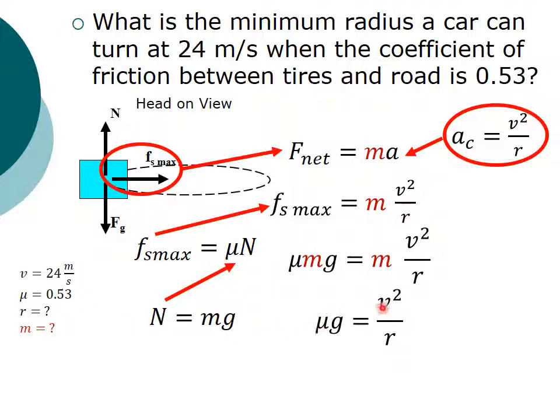Now all I have left is the only variables that I actually know. I know v, I know mu, and g is a constant that I already know, and now I can solve for r. I do a little bit of quick algebra, rearrange, plug, chug, solve, and I get an answer of 110 meters.